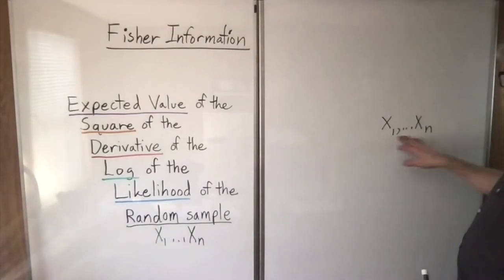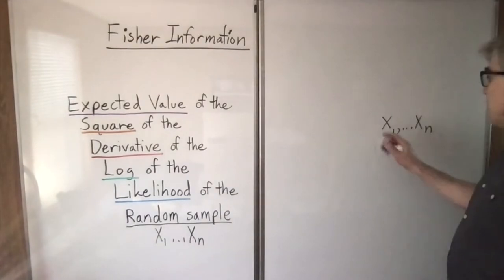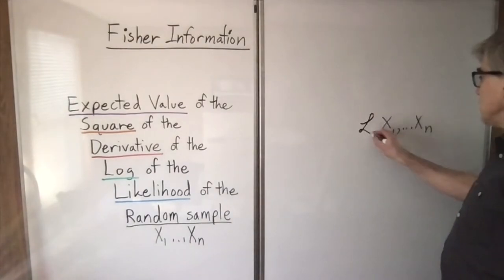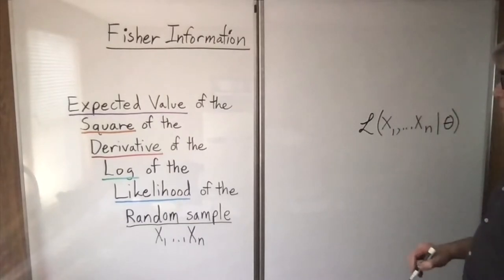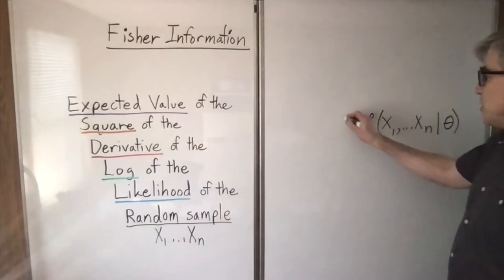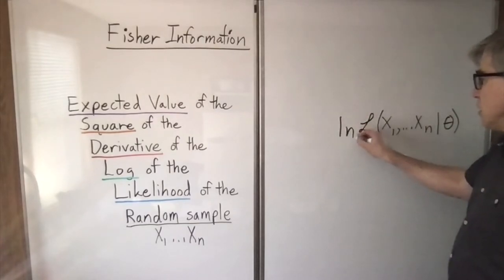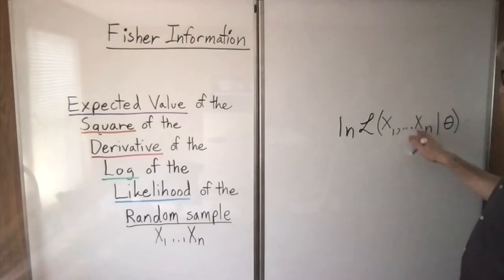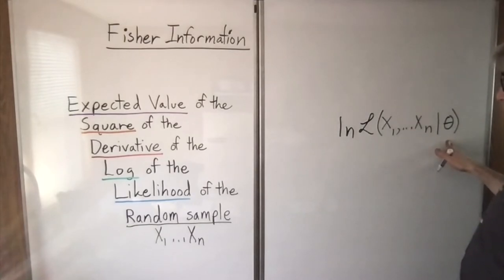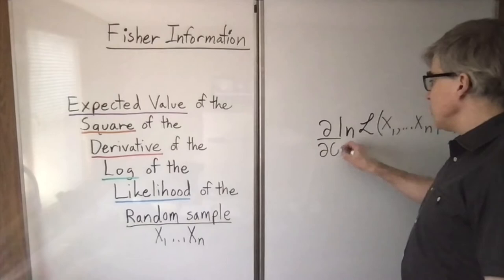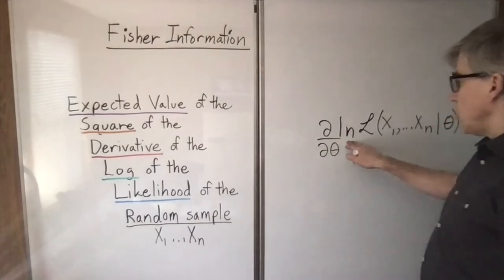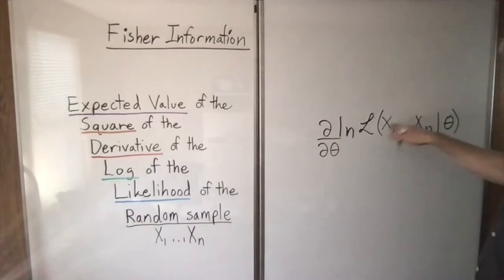So we have a random sample, and then we take the likelihood of the random sample given the parameter. Then we take the log of the likelihood of the random sample given the parameter. Then we take the derivative with respect to the parameter of the log of the likelihood of the data given the parameter.